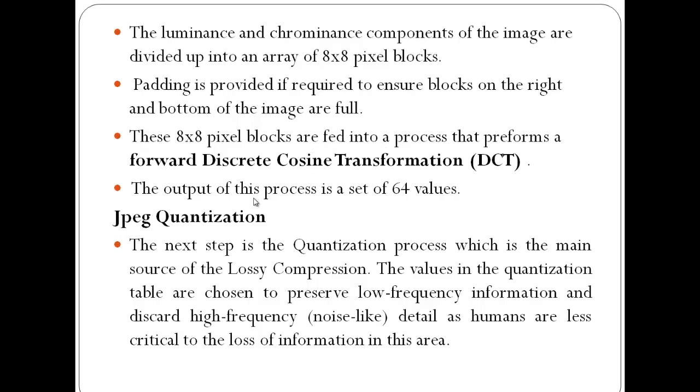These 8x8 pixel blocks are fed into a process that performs a forward DCT, the operation we had seen earlier. The output of this process is a set of 64 values. When I am processing 64 pixels, I get an output of 64 DCT values.